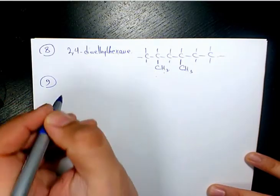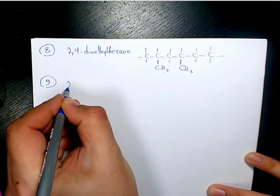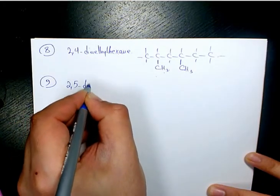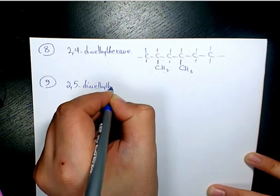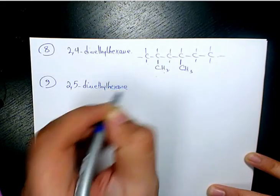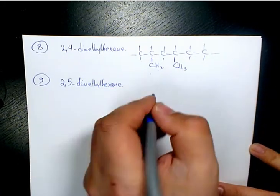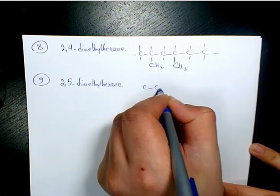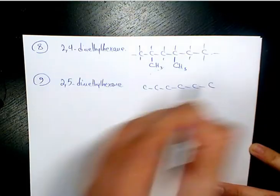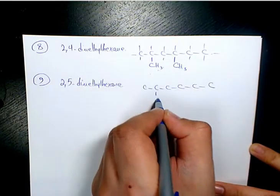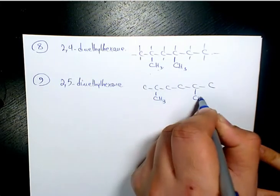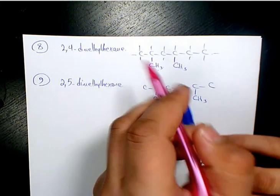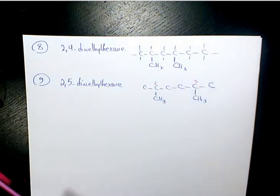Number nine will be 2,5-dimethylhexane. We have six carbon atoms on the main chain, with a methyl group on carbon two and another methyl group on carbon five.